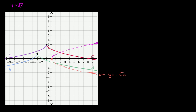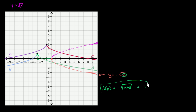Now let's think about how we can shift this thing to look like function a. Function a has two differences: it's shifted to the left by 3 and it's shifted up by 1. If we want to get to a(x), to shift to the left by 3, we replace x with x plus 3. So this is going to be negative square root of x plus 3. That shifted us to the left. And then to shift up, we just add a 1 right over here. So a(x) equals negative square root of (x plus 3) plus 1.